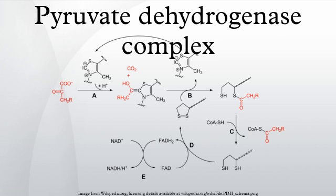Calcium ion has a role in regulation of PDC in muscle tissue, because it activates PDP, stimulating glycolysis on its release into the cytosol during muscle contraction.